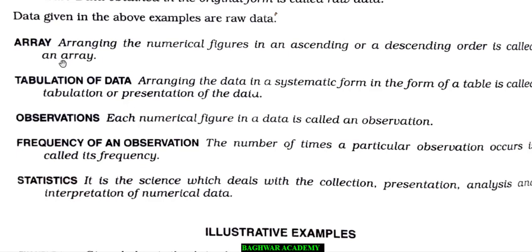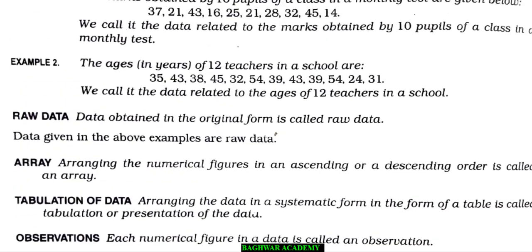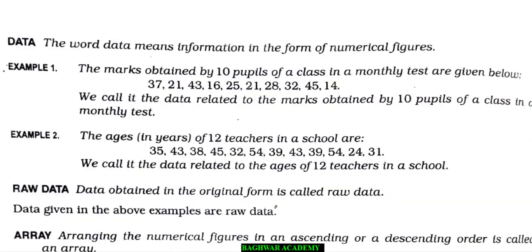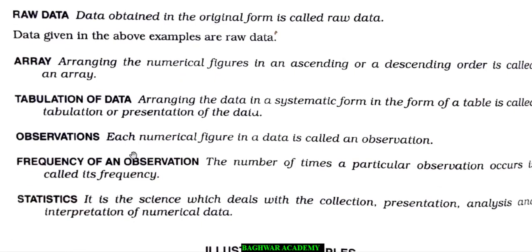These definitions are very important so you need to memorize them. Then you have observations — each numerical figure in a data is called an observation. Just you see, either you are saying the marks obtained or the ages of your teachers — these individual numbers or numerical data will be called observations. So here 37 will be called an observation, 21 will be called an observation, 35 will be called an observation. Finally, you need to remember that each numerical figure in a data is called an observation.